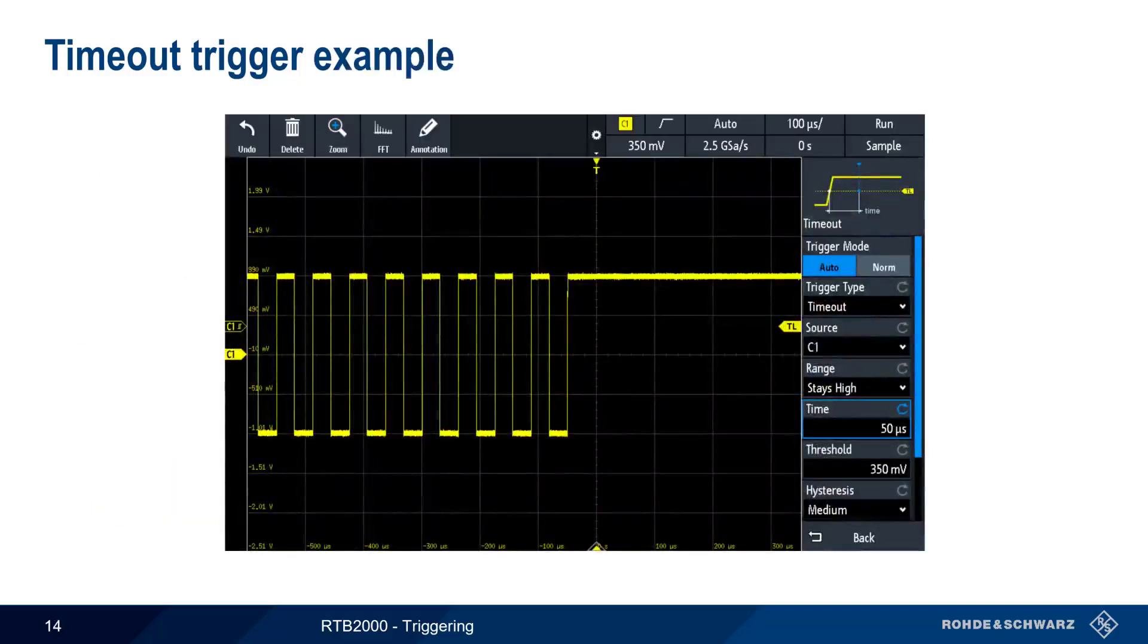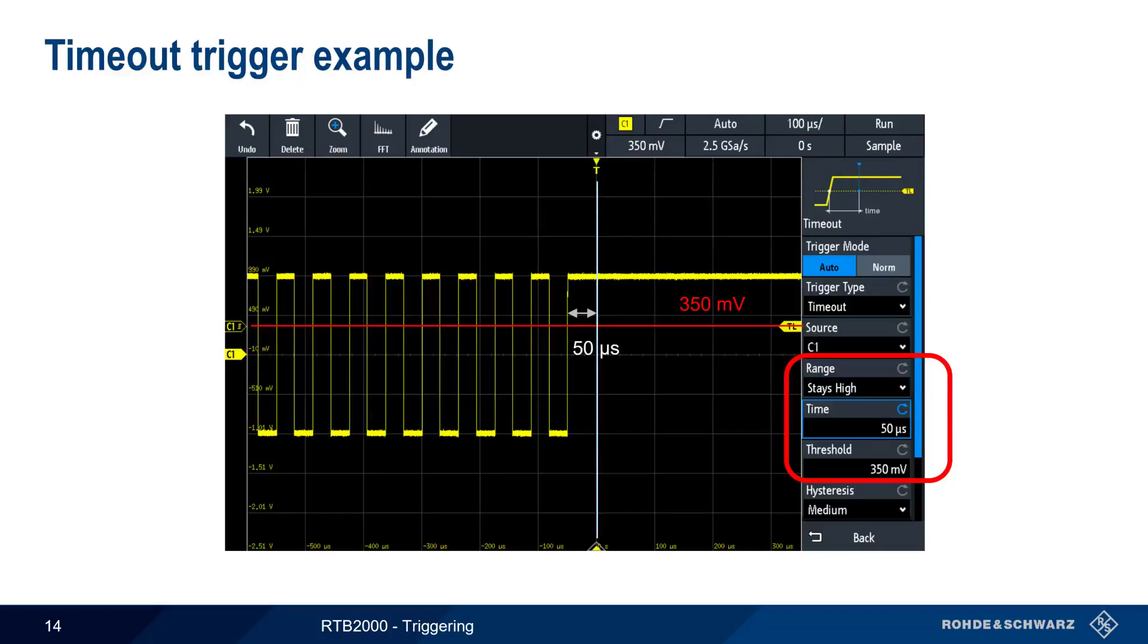Let's look at an example of a timeout trigger. Here, we define this trigger by the signal staying high for more than 50 microseconds, with high defined as 350 millivolts or more. As we can see, the trigger occurred when the signal stayed above 350 millivolts for more than 50 microseconds.